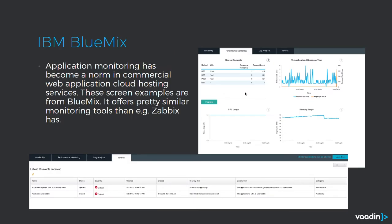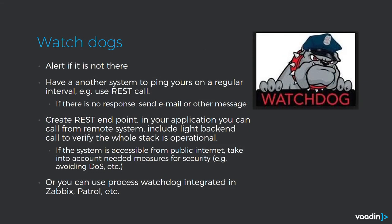I have another example from IBM Bluemix. Many hosting services nowadays, like IBM Bluemix, have these same monitoring tools integrated, so you don't need to install Zabbix or Patrol on your server. There's a control panel where you deploy the application, and you can see things like network traffic and set alerts for processes. These tools have integrated watchdogs.